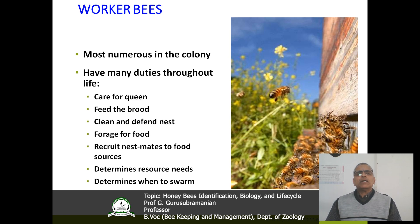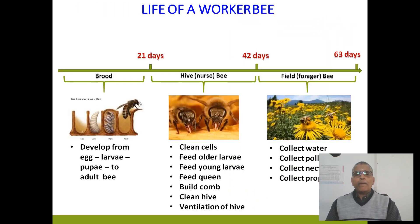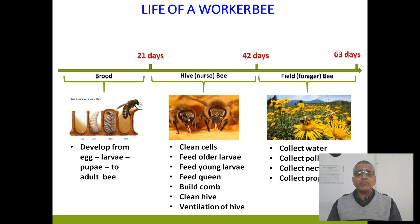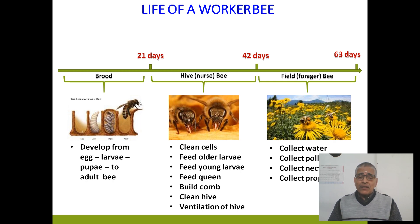Workers' role is to maintain the colony, so they have several jobs. Up to 21 days a worker develops from egg to larva, larva to pupa, pupa to adult. From 21 to 42 days it acts as a nurse bee. The meaning of nurse bees is to clean the cells, feed the young larvae, feed the queen, do comb building, clean the hives, or carry out ventilation of the hives. These are all the functions or division of labor of nurse bees.